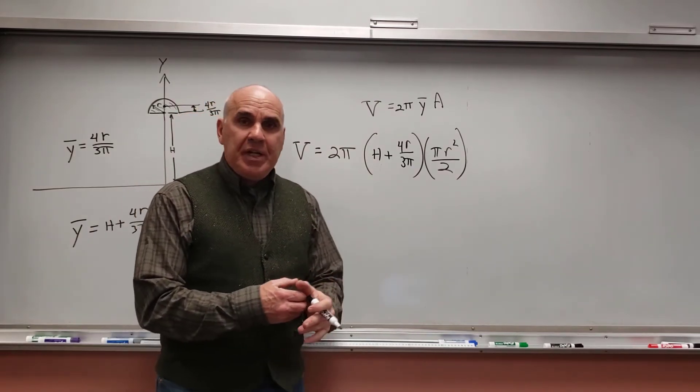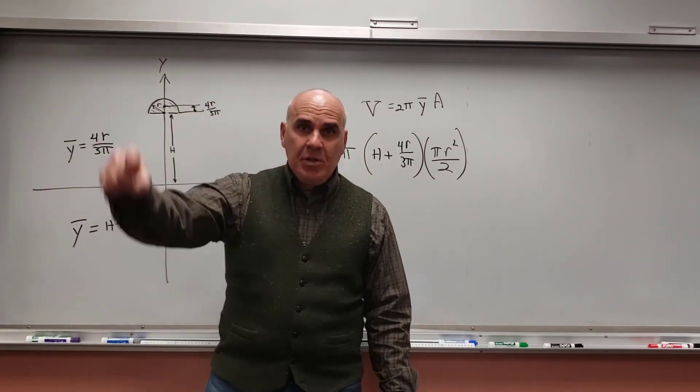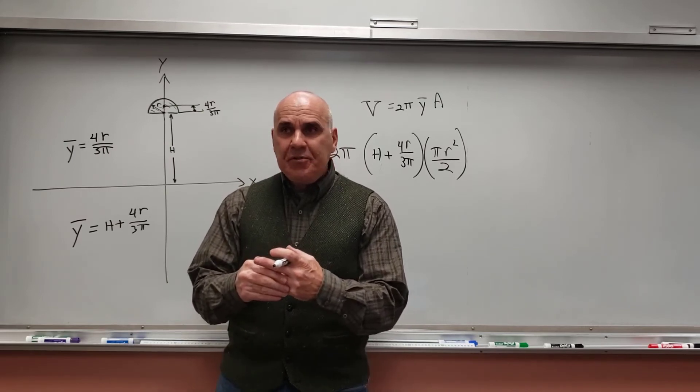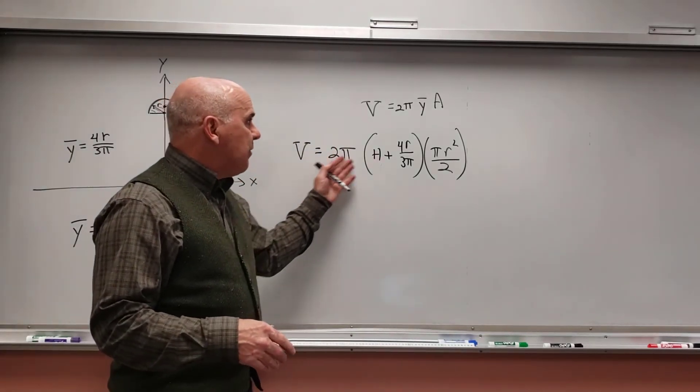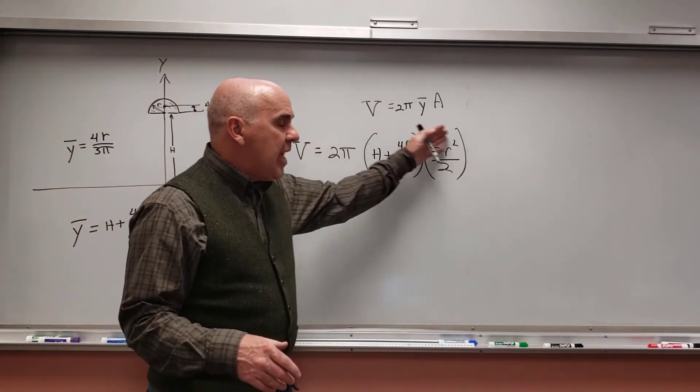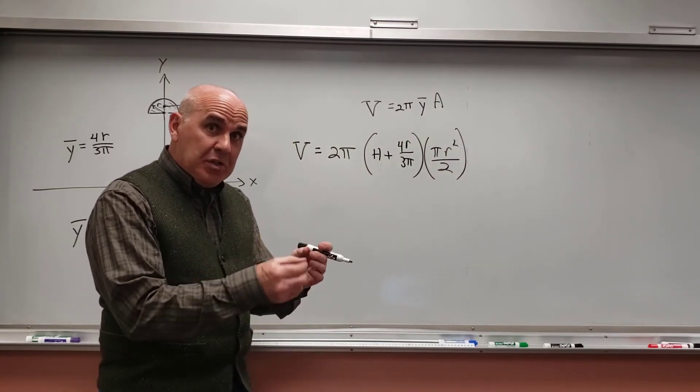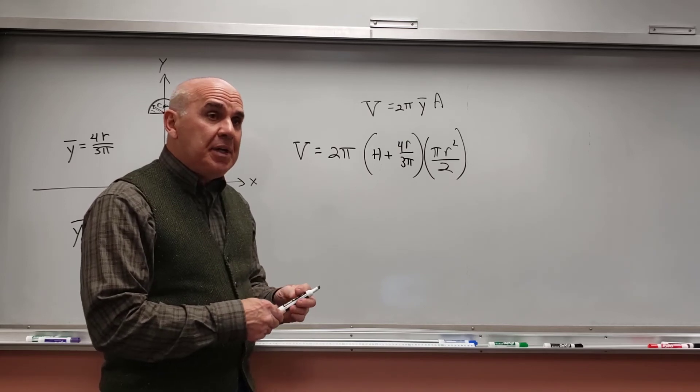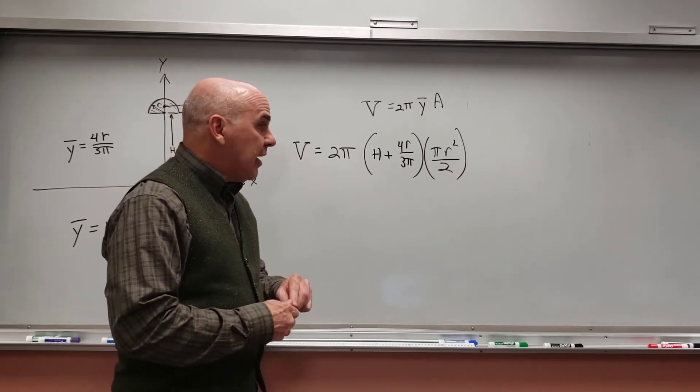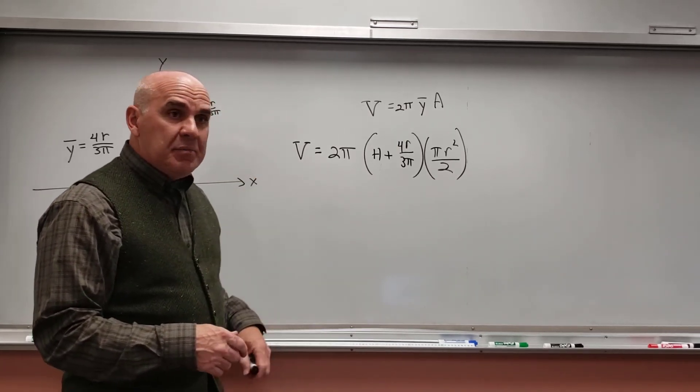So I created this ring out of this semicircle, like a ring that you put on your finger. This would be the volume of that ring. Not inside the ring, just the volume of the metal that's created that ring if I'm forming this out of a metallic semicircle.